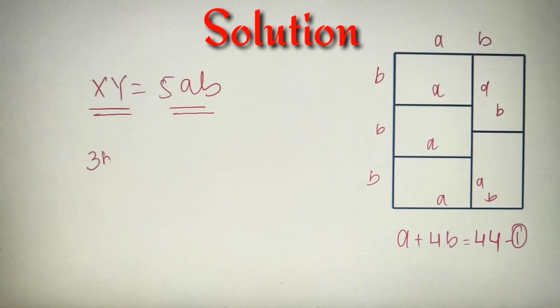Instead of X we can write 3B, and instead of Y we can write A + B. So we have 3B(A + B) = 5AB. We can cancel B from LHS and RHS, and we get 3A + 3B = 5A, or 2A = 3B. So this is our second equation, and we have got two equations with two variables. Now we can solve them easily.